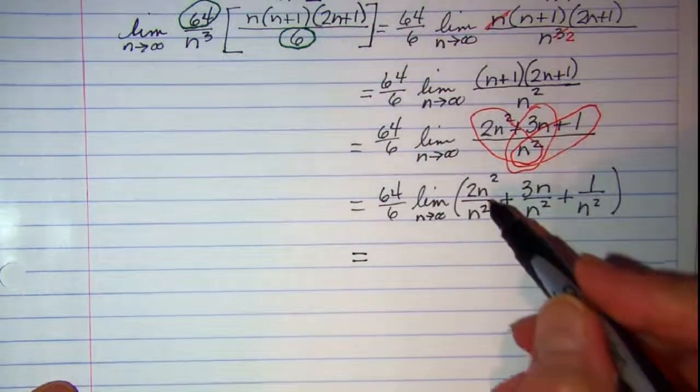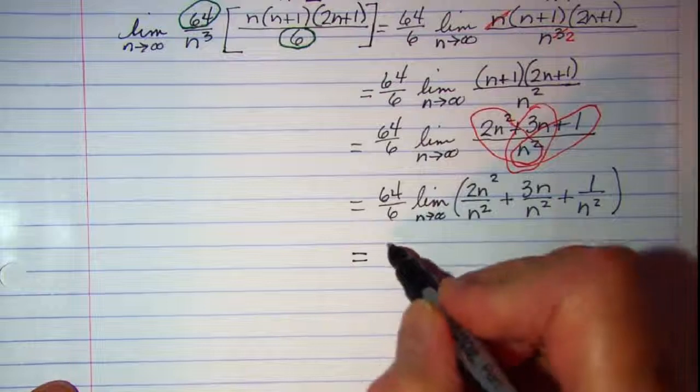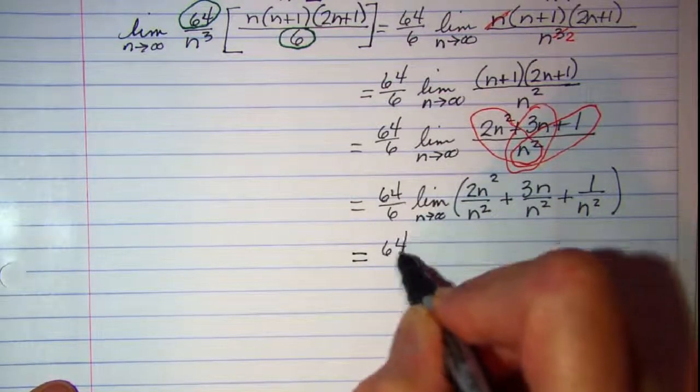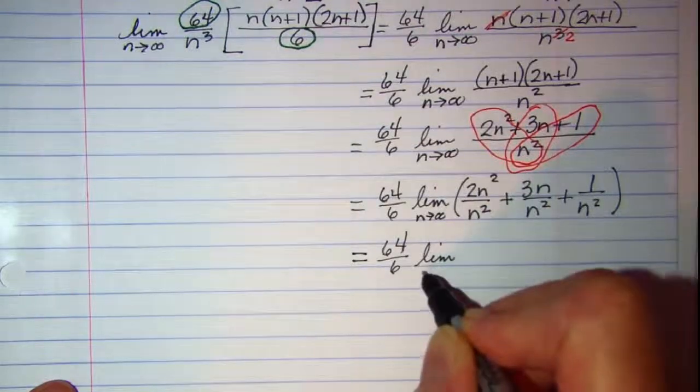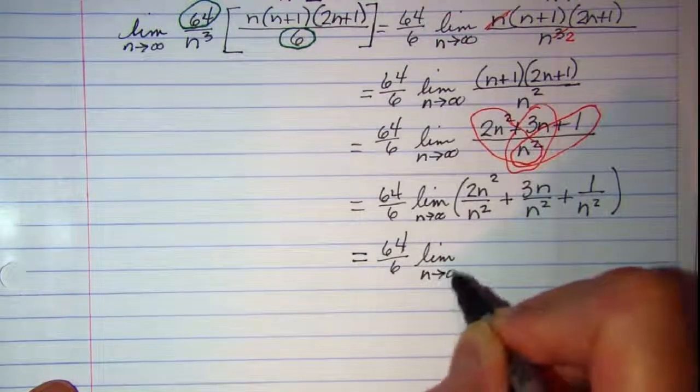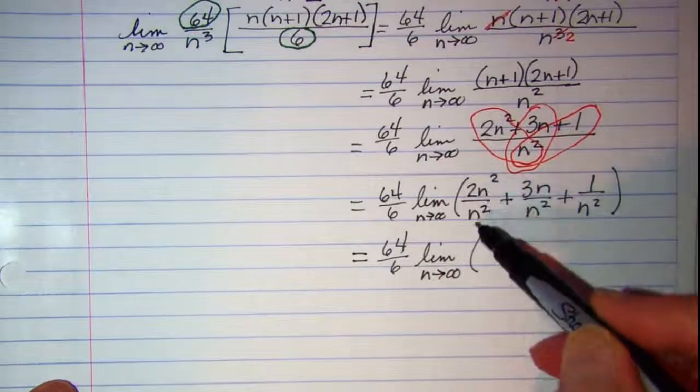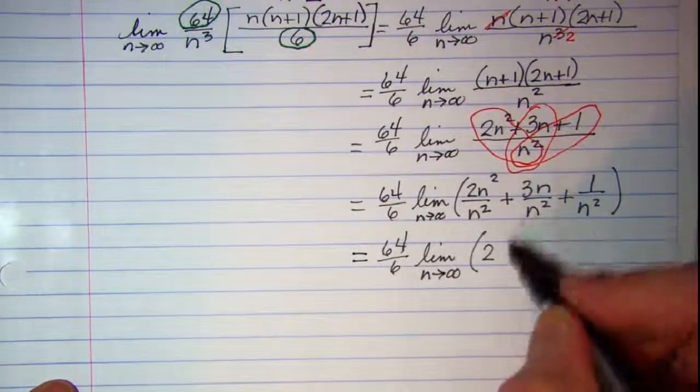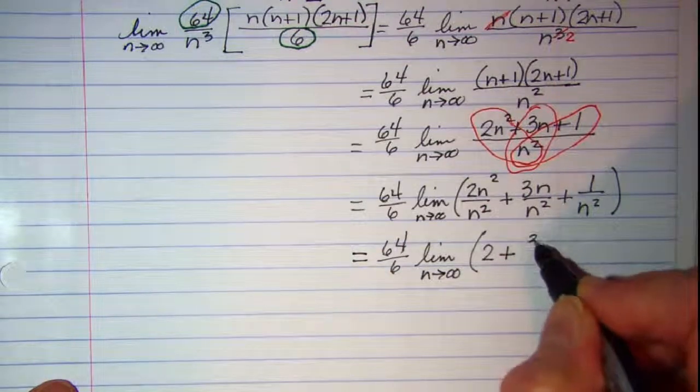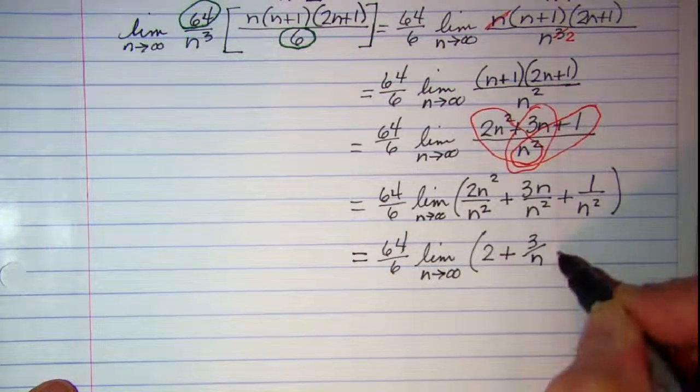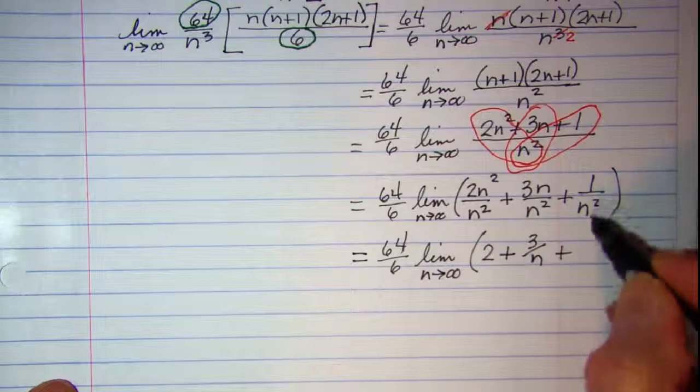And then I can simplify. This is 2. This is 3 over n. And this is 1 over n squared.